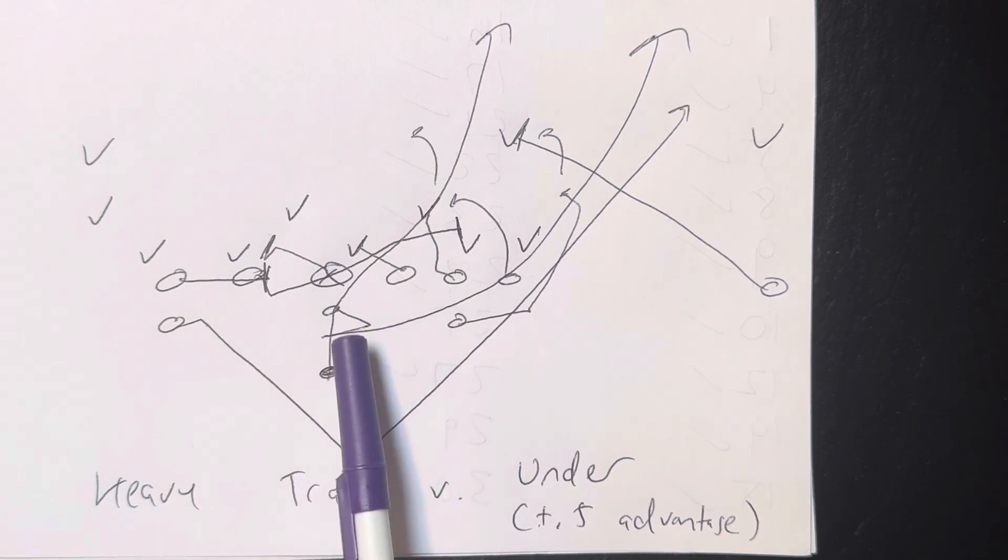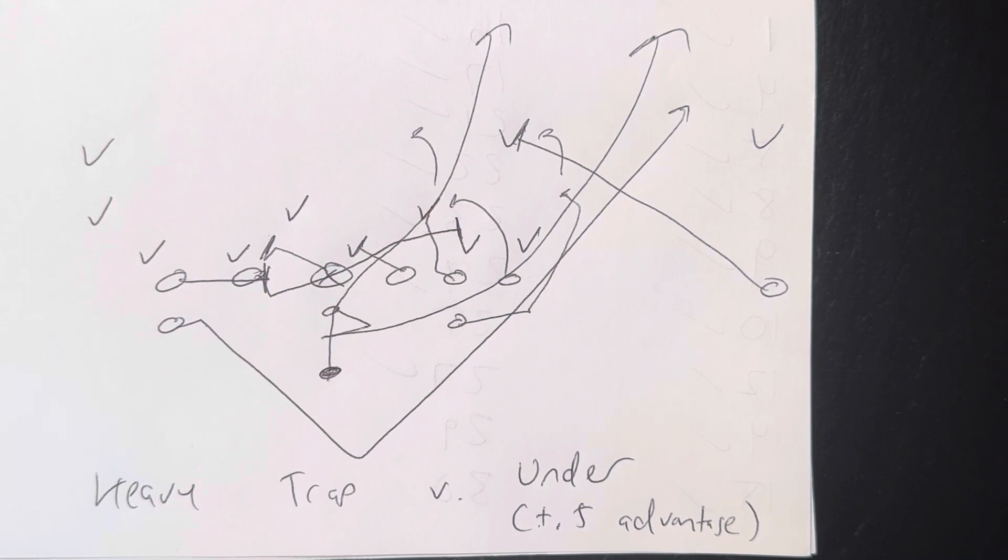Quarterback will then step right foot, left foot, and then he'll turn to the line of scrimmage and carry out the fake through the D gap. You'd only want to do this if they gave you a half-man advantage or greater. Heavy trap versus, in this case, it's an under front.